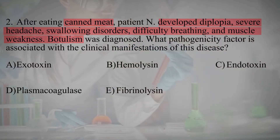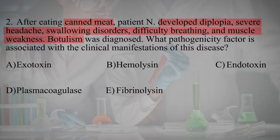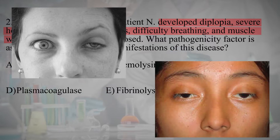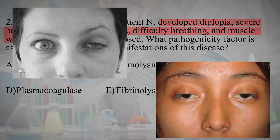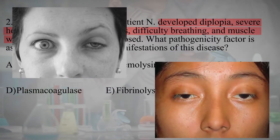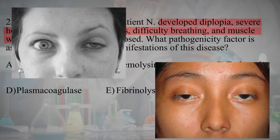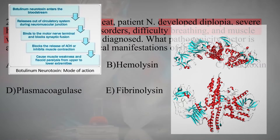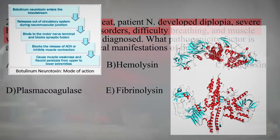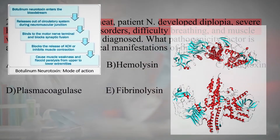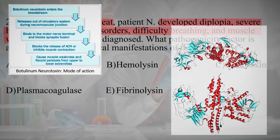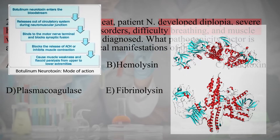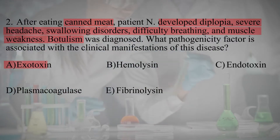The keywords in this test are canned meat, botulism, and botulism symptoms. A similar clinical picture can only be caused by the exotoxin of the causative agent of botulism, because this toxin is a neurotoxin. You can see the mechanism of action of botulinum toxin in the photo. The other toxins in the answer variants are not neurotoxic. Therefore, the correct answer is exotoxin.